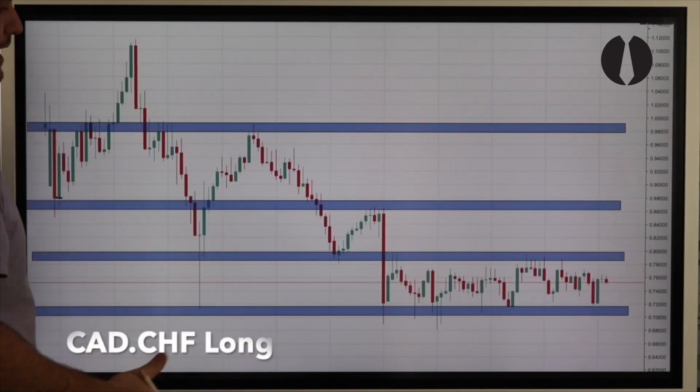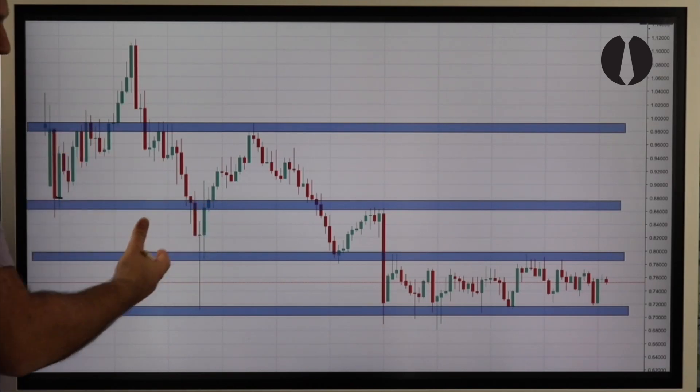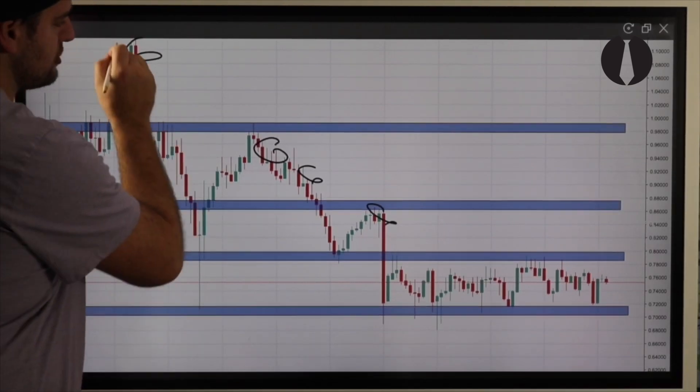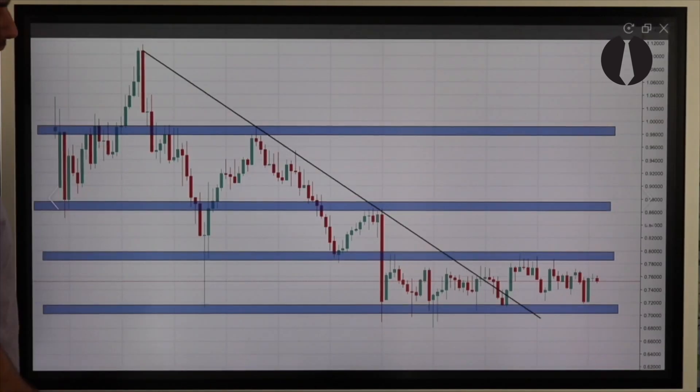All right, CAD Swiss Franc starting on the monthly. What do we do as usual? The first thing we do is we identify our zones, horizontal area significance. I can also see a nice downtrend with lower highs, so we go ahead and we identify our monthly area sensitivity.